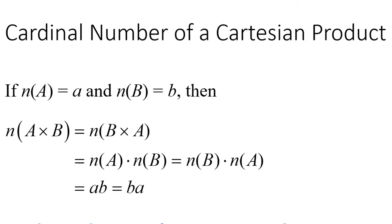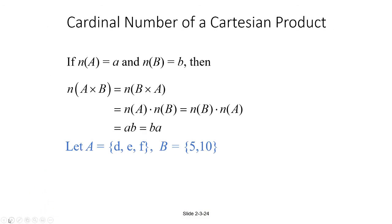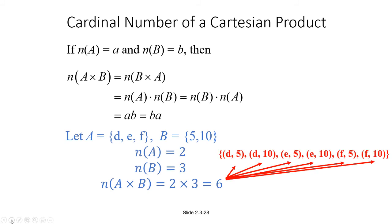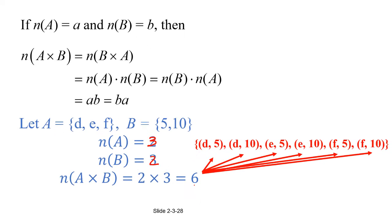The number of elements in A cross B is the same as the number of elements in B cross A. It doesn't matter if A provides the first components and B the second components, or the other way around — you're still going to get the same count, because multiplication is commutative. For example, if set A was {D, E, F} and set B was {5, 10}, the number of elements in A is 3 and in B is 2. So the number of elements in the Cartesian product of A and B is 3 times 2, which is 6. You can confirm this by listing out the elements of the Cartesian product — and yes, there are six elements.